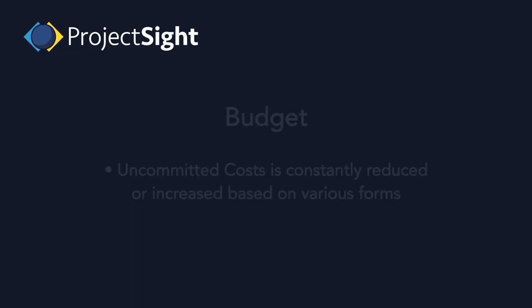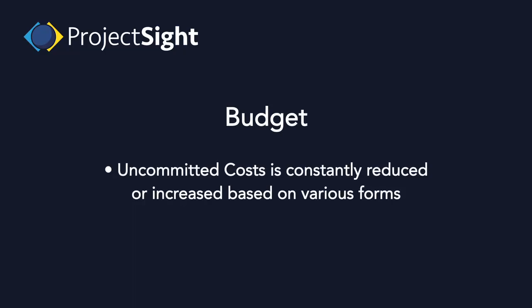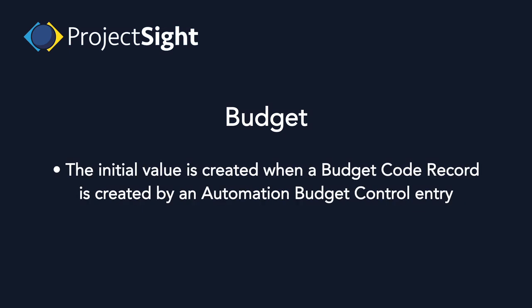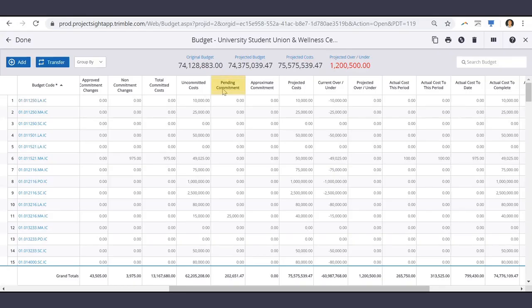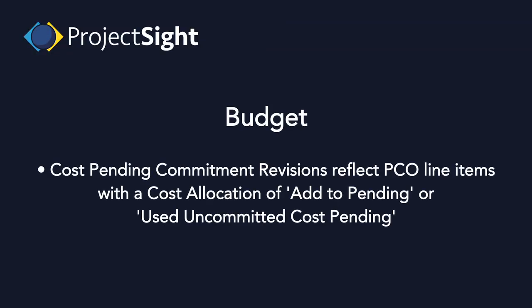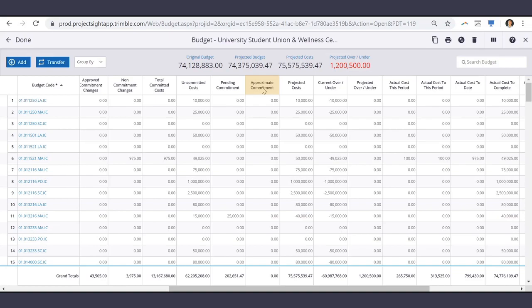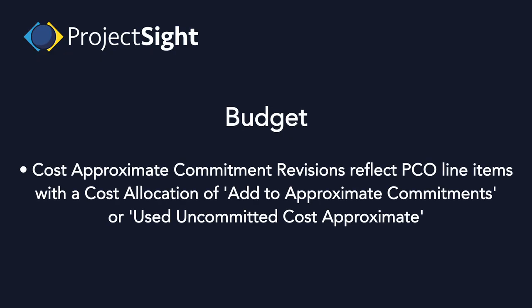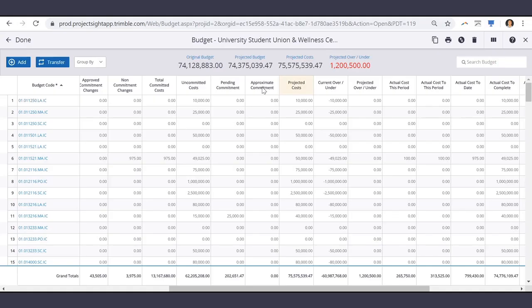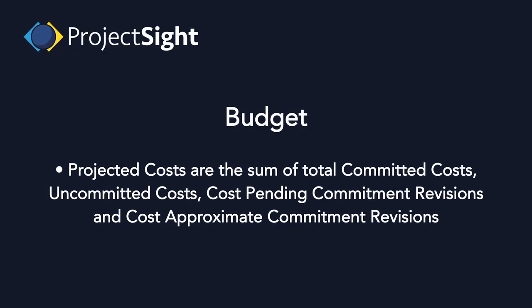Uncommitted costs are constantly reduced or increased based on various forms. The initial value is created when a budget code record is created by an automation budget control entry. Cost pending commitment revisions reflect PCO line items with a cost allocation of add to approximate commitments or use uncommitted costs. Projected costs are the sum of total committed costs, uncommitted costs, cost pending commitment revisions, and cost approximate commitment revisions.